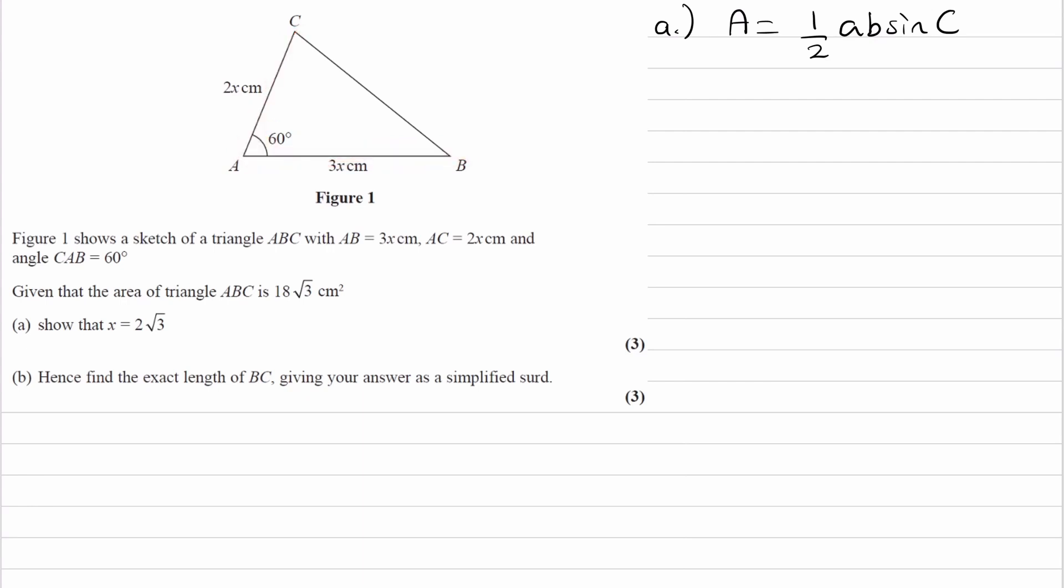So if you were to have a scenario where you had, let's say, these two sides, but then you were given this angle here, you wouldn't be able to use 1/2 ab sin C. It has to be the angle in between the two sides that you have.